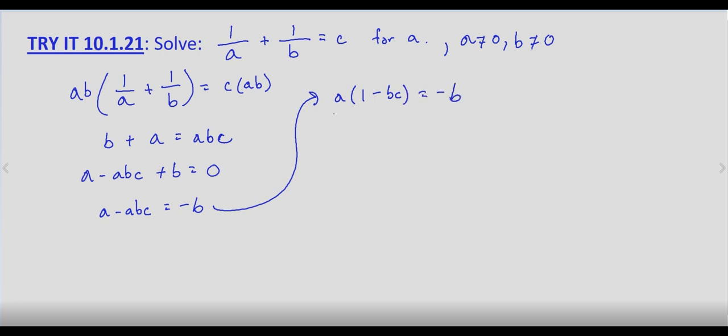Now we can divide both sides by 1 minus bc. And we end up with a equals negative b over 1 minus bc.